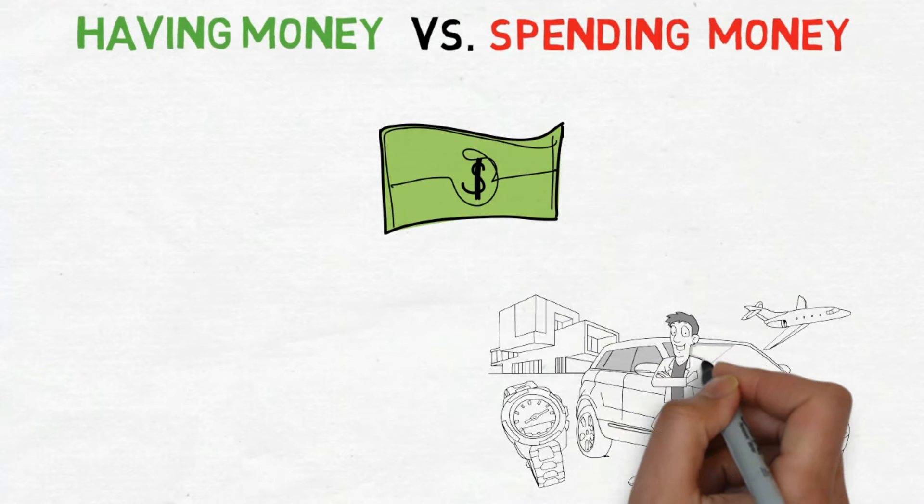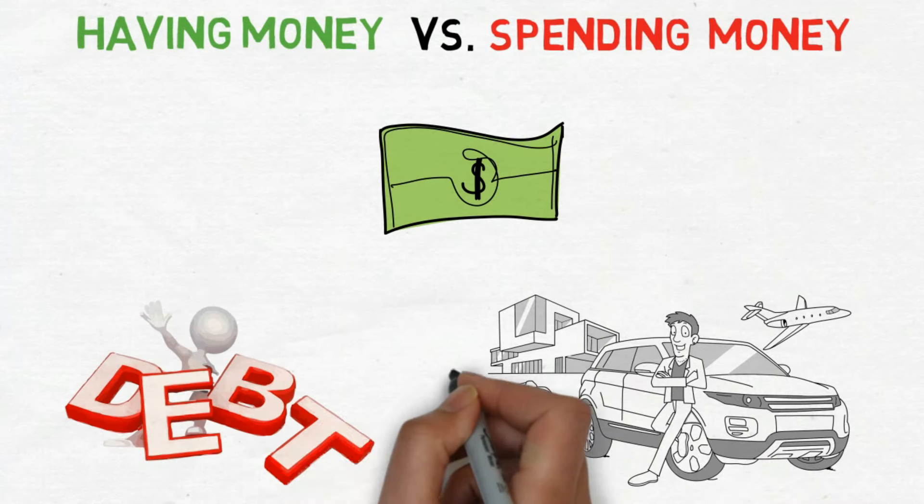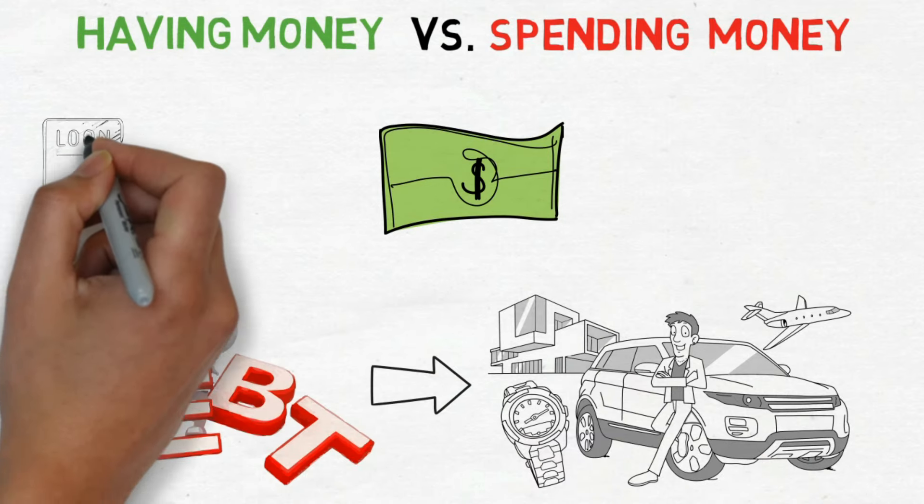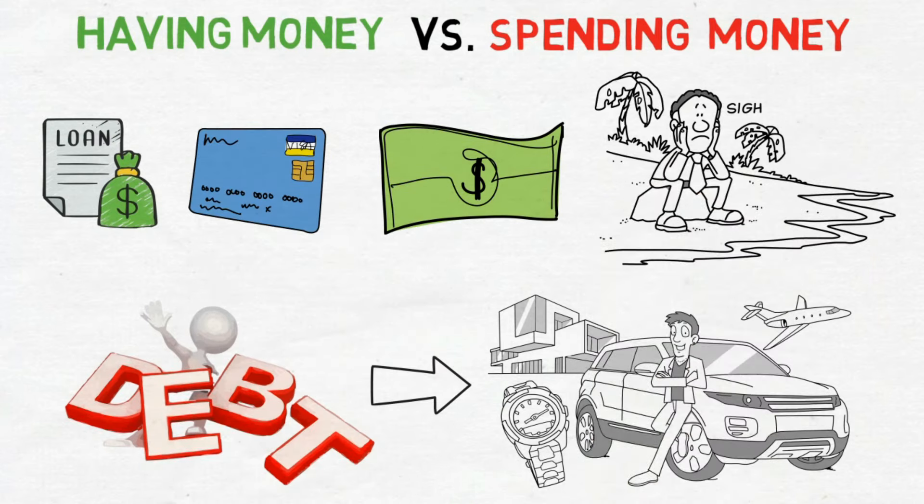Actually, many people who show off fancy cars, clothes, or homes have paid for them by borrowing money. They've either acquired loans or utilized credit cards, effectively indebting themselves to others. So, they're actually just owing a lot of money.